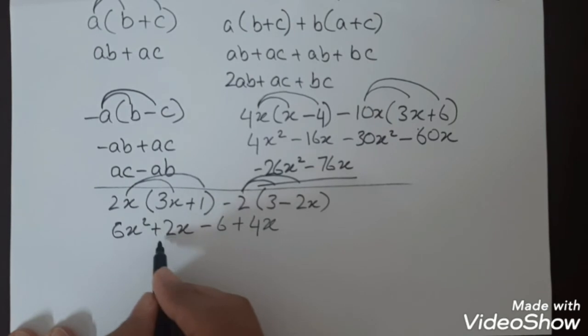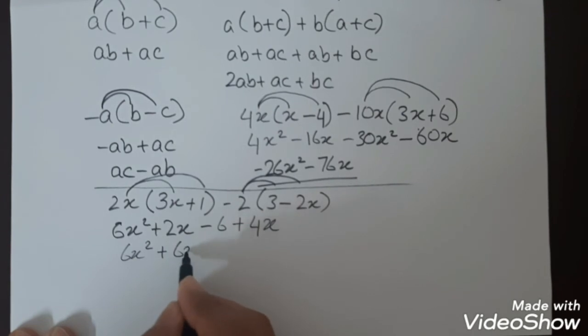Then we'll add 2x with 4x and write 6x² plus 6x minus 6. So this will be the equation for this type of question.